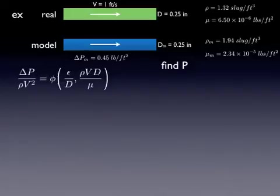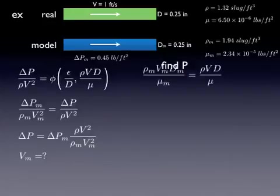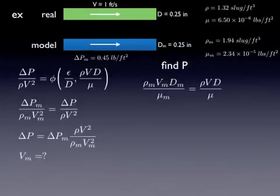I'm looking for delta P, so it would make sense that I want to start with that pi value. Invoke similitude so they have to be equal in the model system and the real system. Now I'm going to solve for delta P in the real system. And now I can just solve, right? I've measured delta P in the model, I've got the two densities. But wait, I don't have both velocities. I only have velocity in the real system. So I don't have enough information to solve this because I didn't measure the velocity in the model.